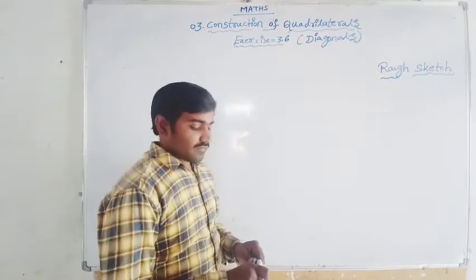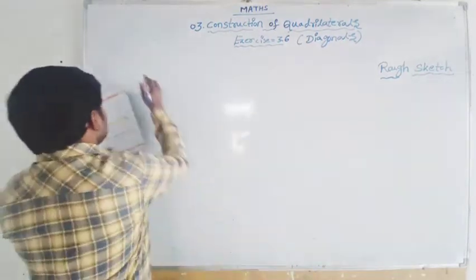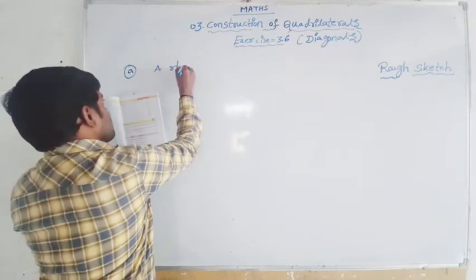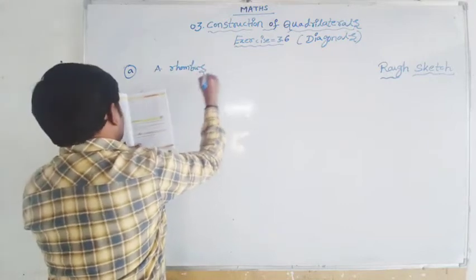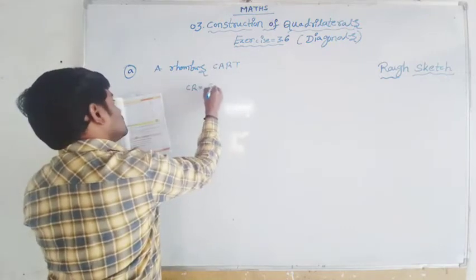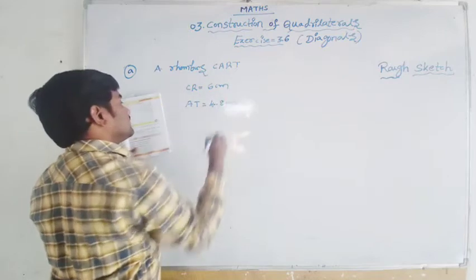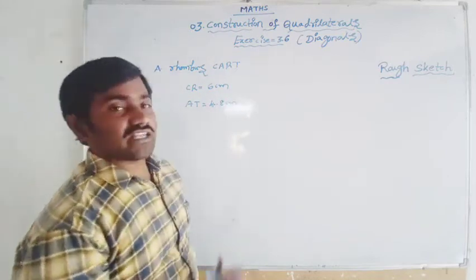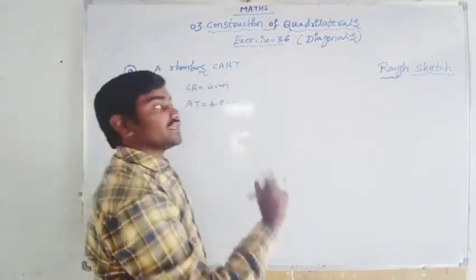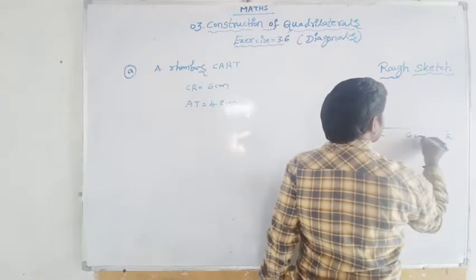Completely there are three questions here. The first two questions are based on rhombus, and the third one is a square. I will construct one rhombus and one square here. The first one — I will take a rhombus CARD with CR equal to 6 centimeters and AD equal to 4.8 centimeters. Now we have to construct the rhombus with these diagonals. So what you take is any one of these diagonals — take CR equal to 6 centimeters and draw it here.